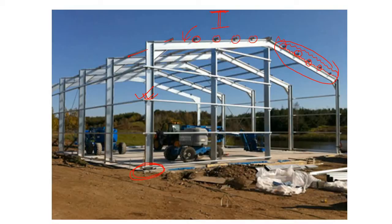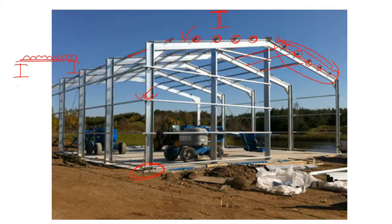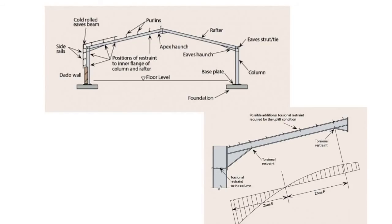Now, how does the load actually travel? The loading over the sheeting comes to the purlins first, because the sheeting is installed over the purlins. Then from the purlins, the load comes to the rafter. The purlins are rested over the rafters, so the reaction from the purlins acts as a load on the rafter. To design this rafter, you consider the load coming from the purlins, which gives you shear force and bending moment.